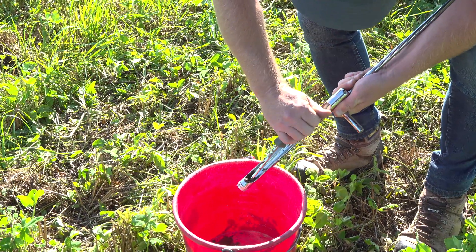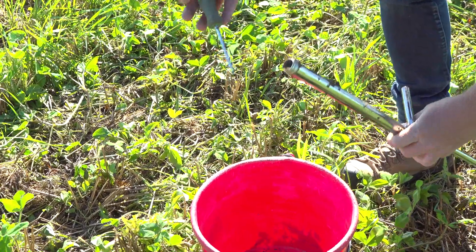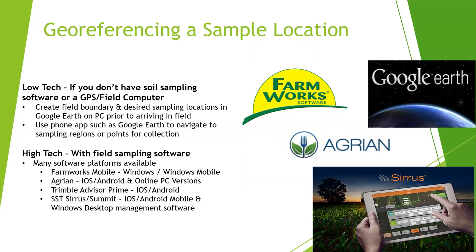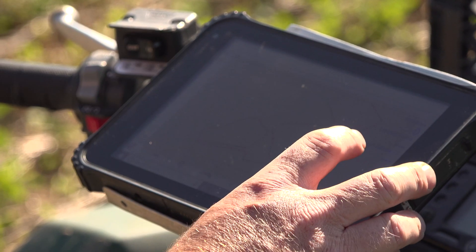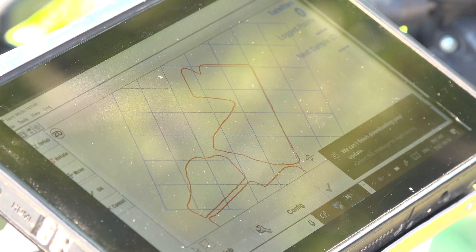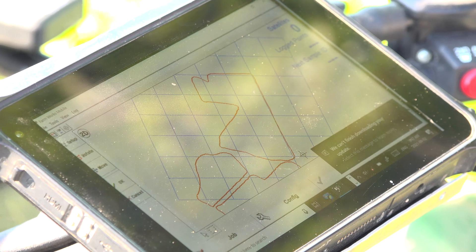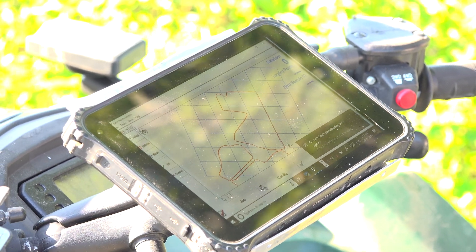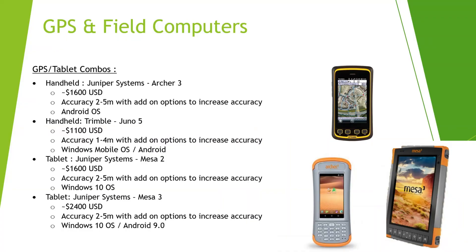Certain soil types, especially muck soils, can be difficult to remove. Depending on the type of sampling you require — but really in all instances — it is recommended to geo-reference your sample. Knowing where a sample came from is an important part of farm record keeping. It can also be imported into multiple software platforms and allows you to spatially correlate soil properties to plant tissue analysis, in-season plant biomass via drone or satellite, final crop quality and yield, as well as many other factors. It's important to mention that there are plenty of choices for your operation.